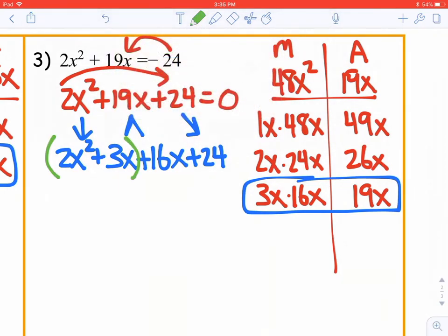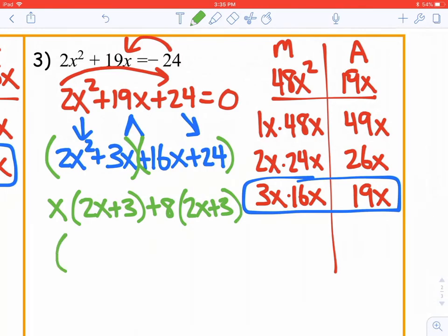Let's group the first two and the last two. From 2x squared plus 3x, we could take out an x, and we have 2x plus 3 left over. From 16x plus 24, we could take out 8, and we have 2x plus 3 left over. Then put x plus 8 together, and 2x plus 3. And those are our factors.